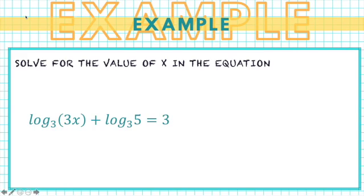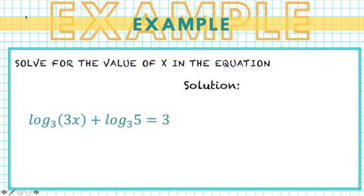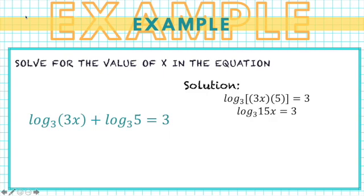Now consider: logarithm of 3x to the base 3 plus logarithm of 5 to the base 3 equals 3. First, apply the product rule of logarithms: logarithm of (3x times 5) to the base 3 equals 3, which simplifies to logarithm of 15x base 3 equals 3. Converting to exponential form: 3 raised to 3 equals 15x. Dividing both sides by 15, x equals 3 over 5.